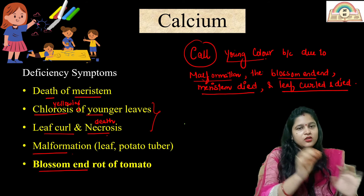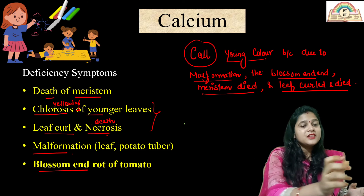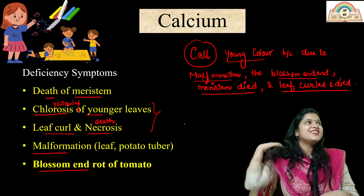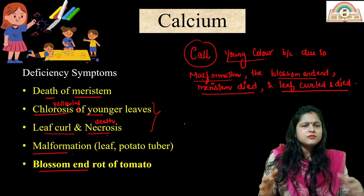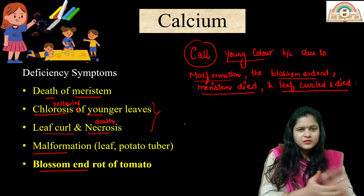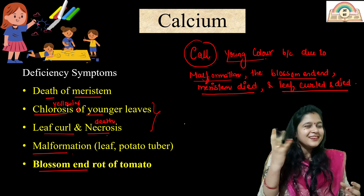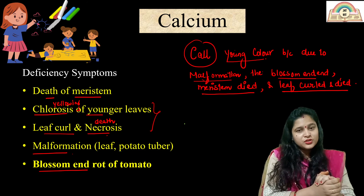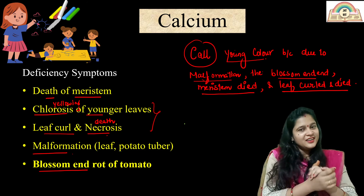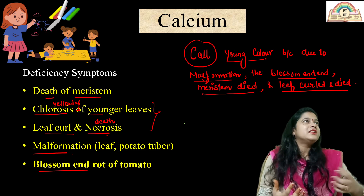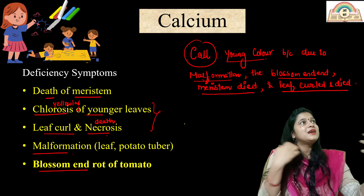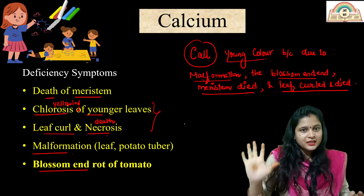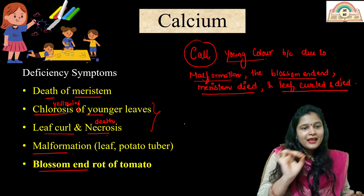A summary mnemonic: 'Call Young Color due to Malformation — Blossom ended, Meristem died, Leaf curled and died.' Call means calcium; Young means younger leaves have chlorosis; Color means chlorosis. Due to malformation, the blossom ended (blossom end rot), the meristem died, and the leaf curled and died — leaf curling and necrosis. Died means necrosis.